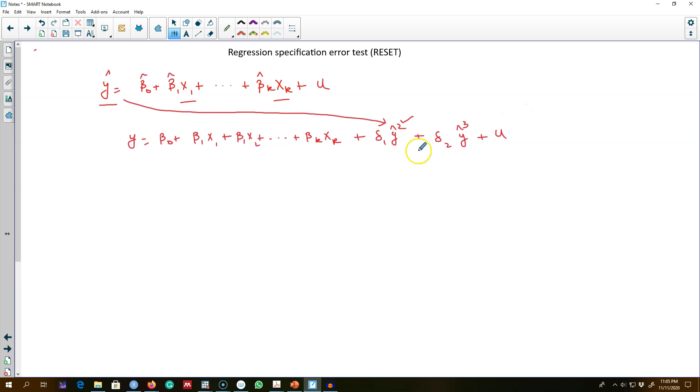If we look closely here, this y hat includes x1 squared, x2 squared up to xk squared, as well as x1 times x2, x1 times x3, and so on. So this y hat squared term contains all these terms inside it, so we are essentially testing whether there is functional form misspecification.